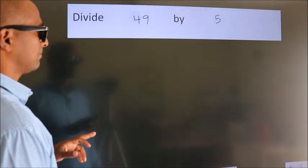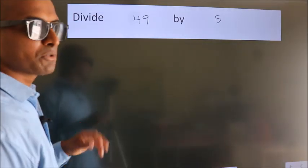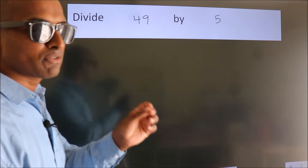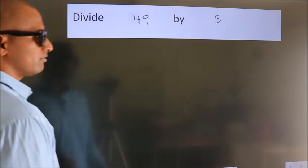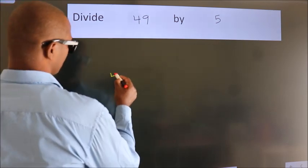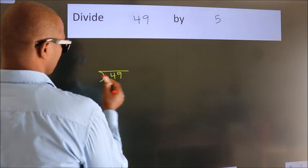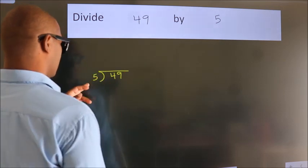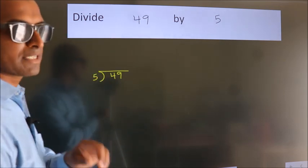Divide 49 by 5. To do this division, we should frame it in this way. 49 here, 5 here. This is your step 1.